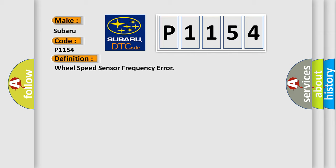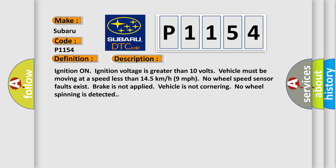And now this is a short description of this DTC code. Ignition on, ignition voltage is greater than 10 volts. Vehicle must be moving at a speed less than 145 kilometers per hour, 9 miles per hour. No wheel speed sensor faults exist. Brake is not applied. Vehicle is not cornering. No wheel spinning is detected.